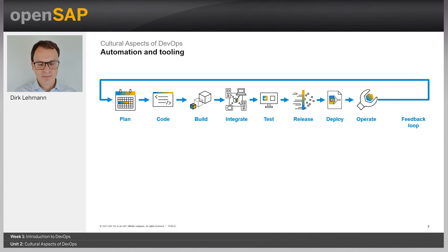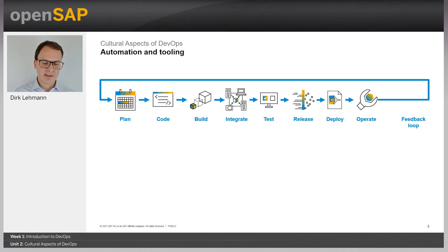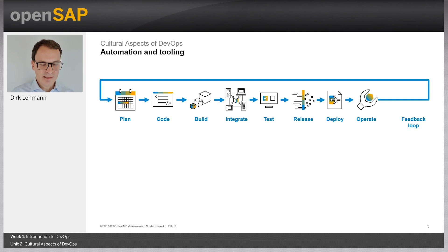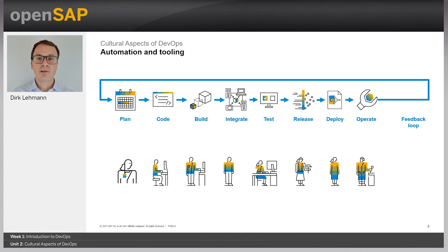Speaking about DevOps, many people associate with it things like process automation, deployment pipelines, containerization, and other technical terms. Which is not wrong, but it's a limited technical view on DevOps. Imagine you successfully implemented all these technical measures with a high degree of automation all over the place in your company. At the end, those tools and technical measures will not provide you with their full potential if you don't care about the people involved in those processes.